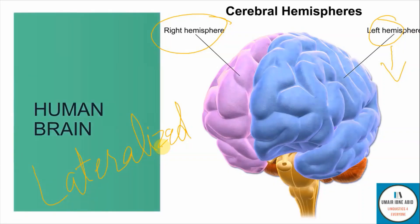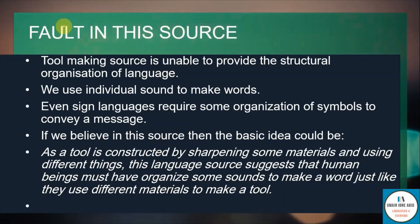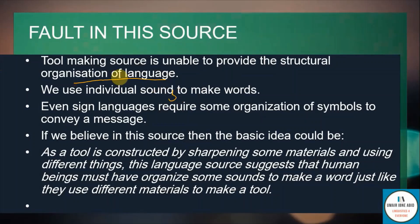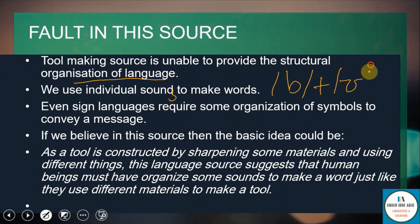But what is the fault in this source? The first issue is that the tool-making source is unable to provide the structural organization of language. We use individual sounds to make words. For example, we have three sounds — B, U and K — and we make the word 'book'.